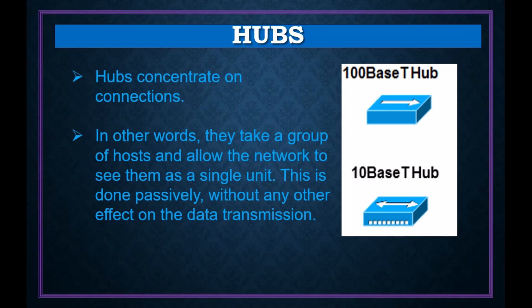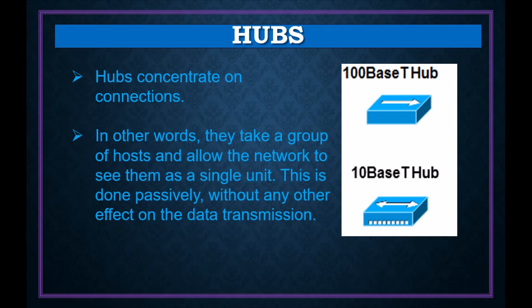Full duplex means both persons can send and receive at the same time — like a mobile phone call where both sides can talk simultaneously. Half duplex means only one person can talk at a time, like a walkie-talkie. A hub uses half duplex technology, meaning while I am sending data, the other person must wait until I finish before they can send.